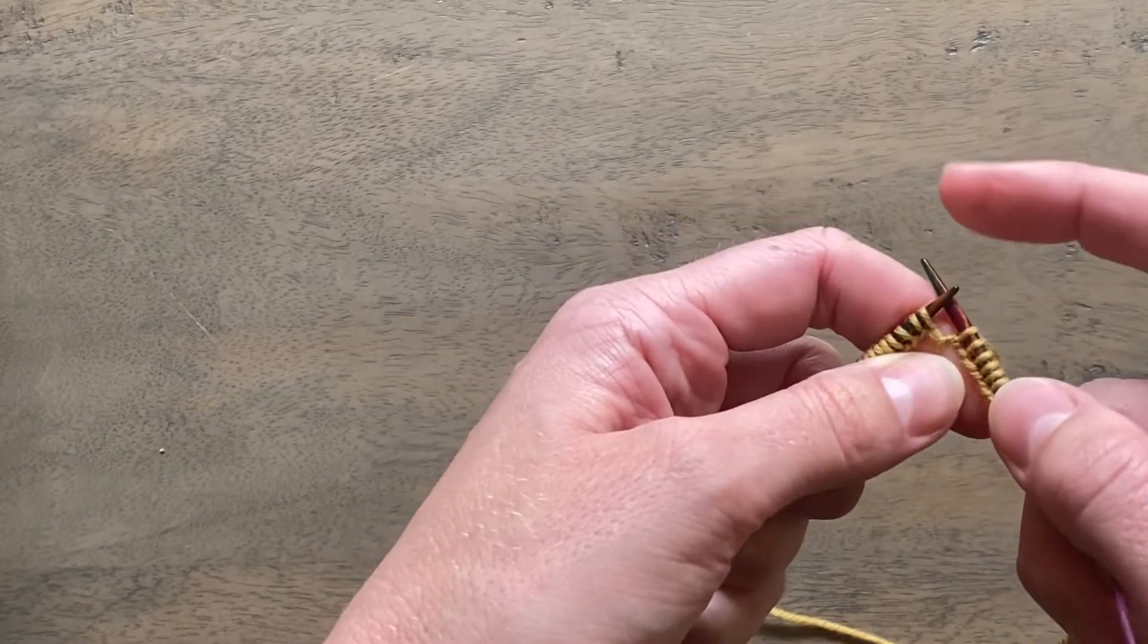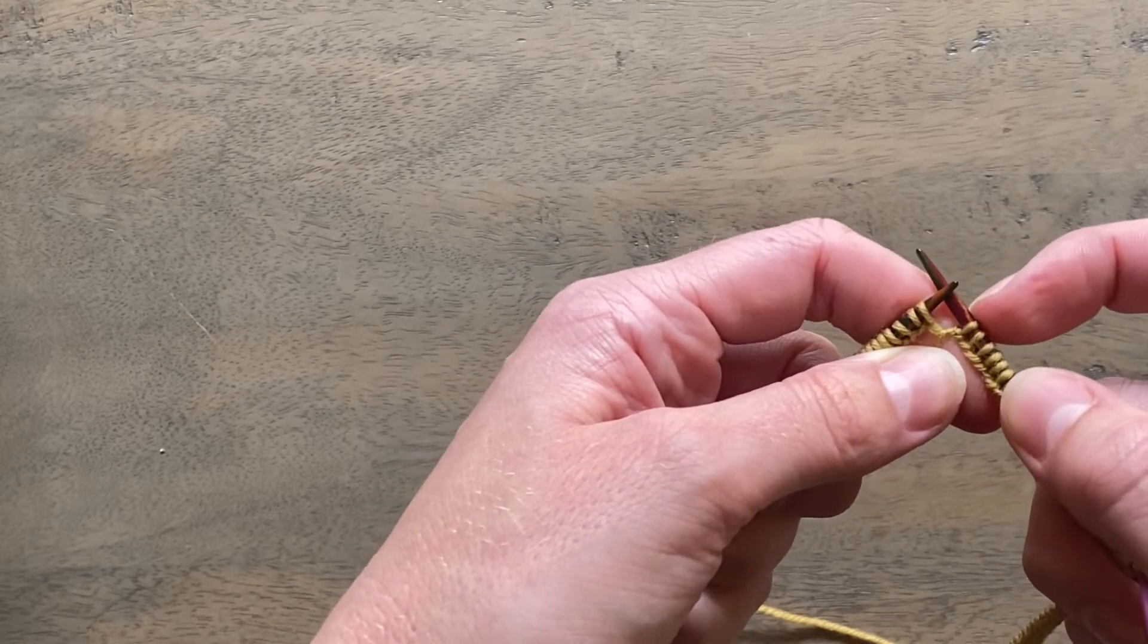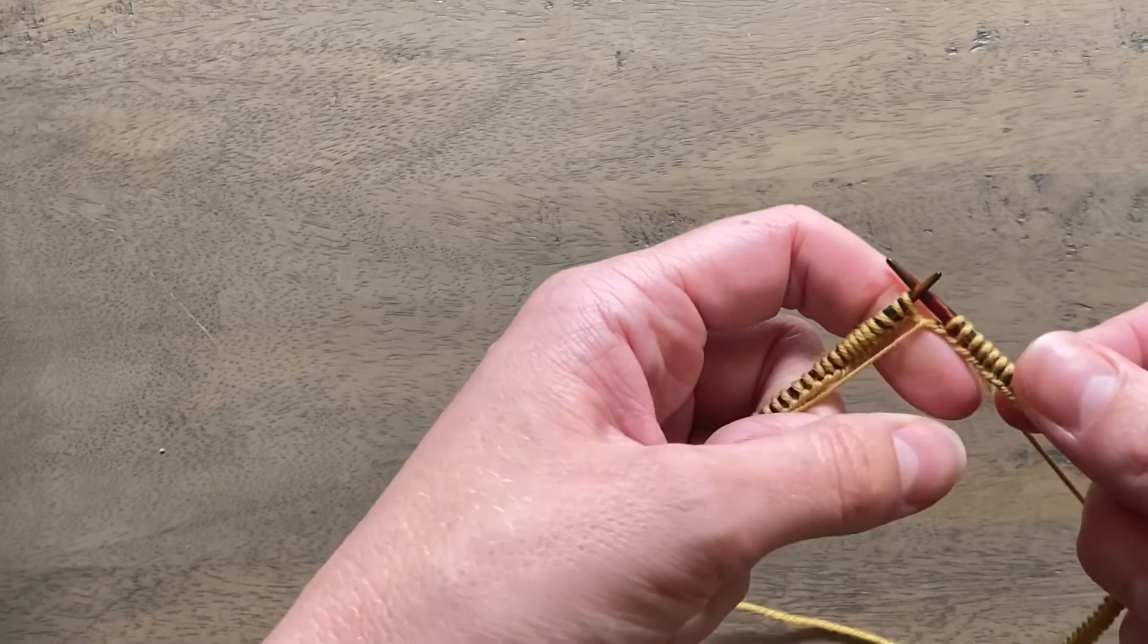Once you've done that you're ready to place your marker to indicate where the beginning of your round is and you're ready to start your ribbing.